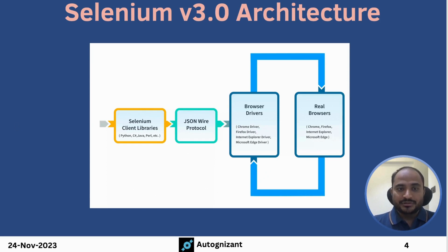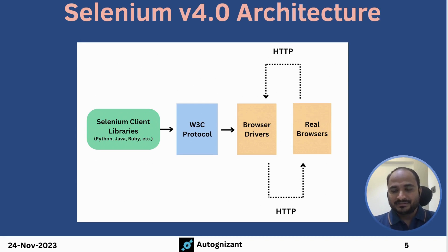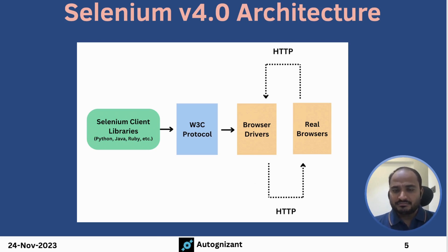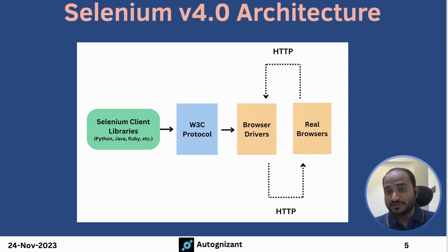Now let's talk about Selenium 4.0 architecture. It is completely the same as Selenium 3.0 except for the communication protocol. In Selenium 4.0, the major change is that the communication protocol changed from JSON wire protocol to W3C protocol. Why was Selenium 3 working fine but they still changed the protocol? All browsers are W3C compliant.